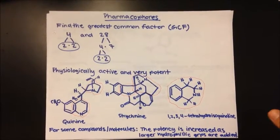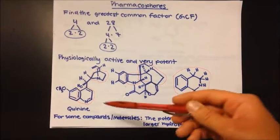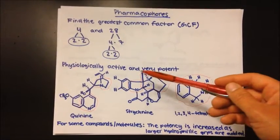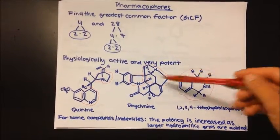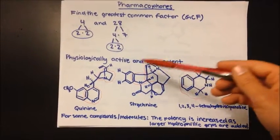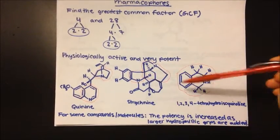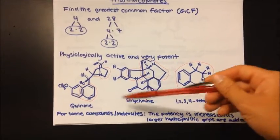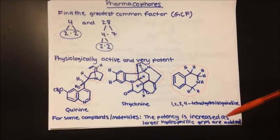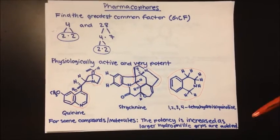Let's take a look at our first group of pharmacophores. These are quinine, strychnine, and 1,2,3,4-tetrahydroisoquinoline — physiologically active and very potent pharmacophores. Each of these have features in common with each other, which I have circled in red on each one of these molecules. For some compounds, potency is increased as larger hydrophilic groups are added, but this isn't the case for all molecules.